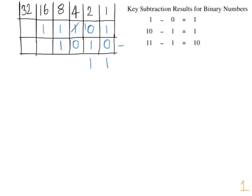Going into the next column — that was crossed out, leaving us with a zero — so zero take away zero leaves us with a zero. The next column over: a one take away one, equivalent to an eight take away an eight, just gives us a zero.